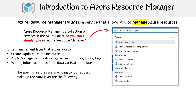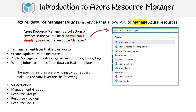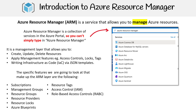We're going to be looking at subscriptions, management groups, resource groups, resource providers, resource locks, Azure Blueprints, resource tags, access control (also known as IAM role-based access controls), Azure Policies, and ARM templates. That is what we're going to be covering in this Azure Resource Manager section.